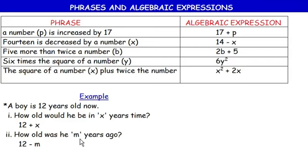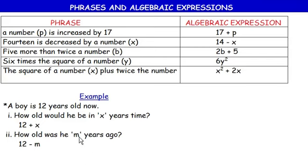A tip: if you're unsure how to represent a phrase, substitute a real number first. For 'how old was he m years ago', try 'how old was he 2 years ago': 12 − 2. Then just replace 2 with m. It's that simple.